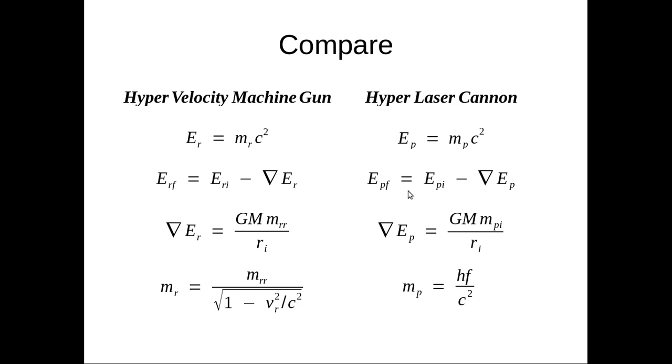We have the change in energy is this - the only difference is the rest mass of the round and the initial mass of the photon. Everything's pretty much the same but here's where it gets different: mr is equal to this and mp is equal to this.